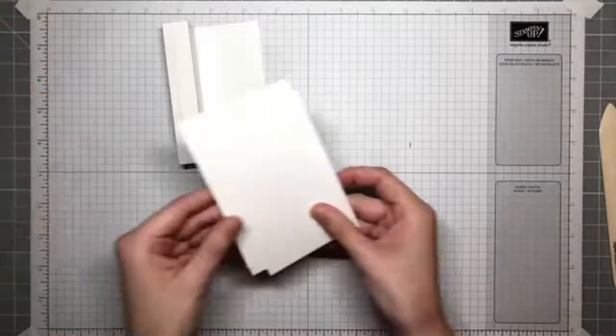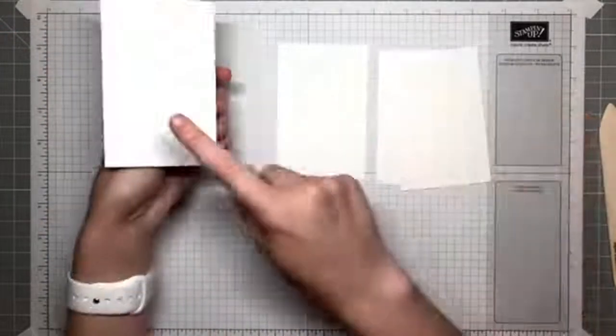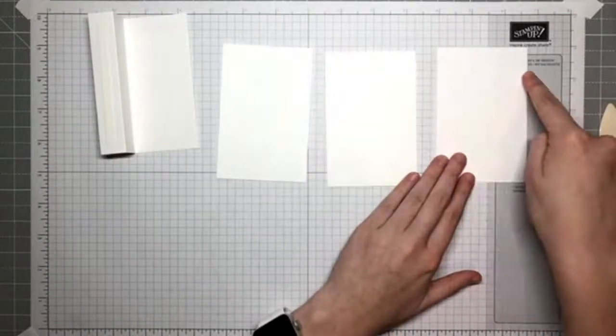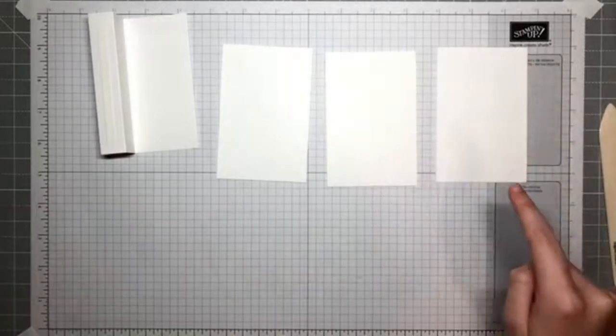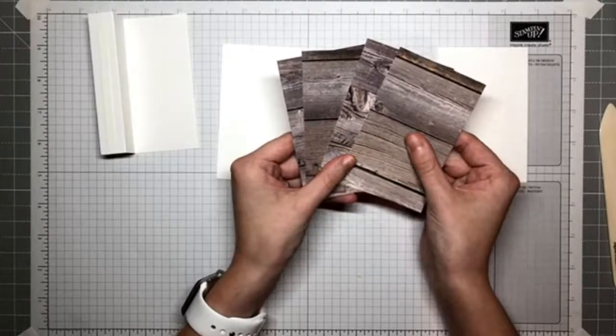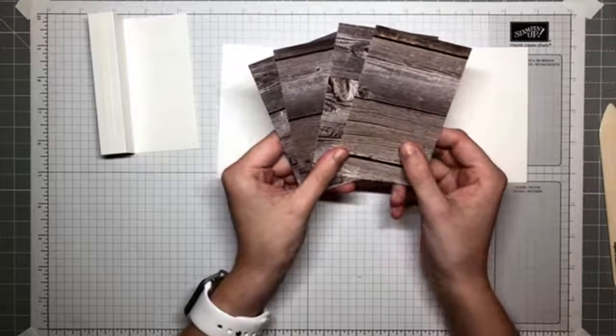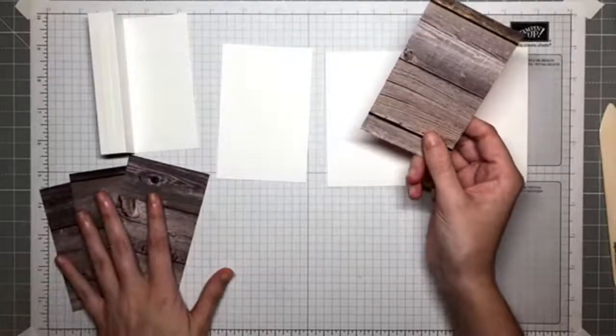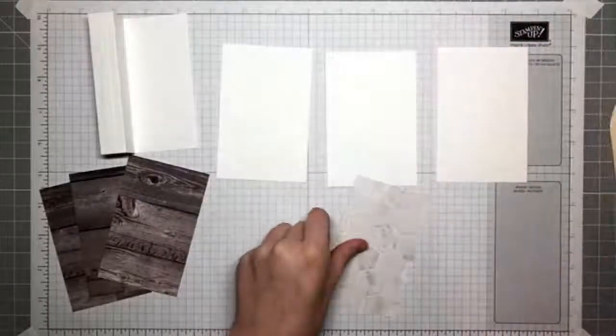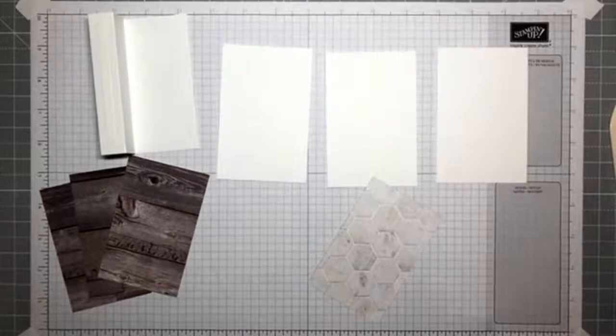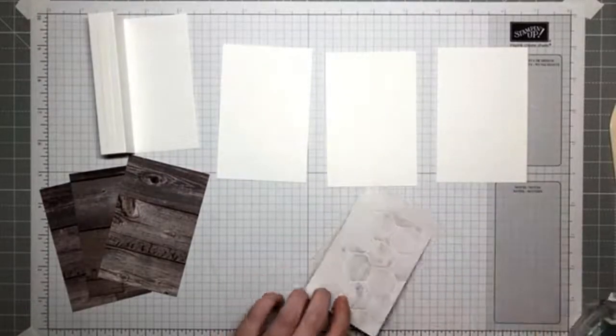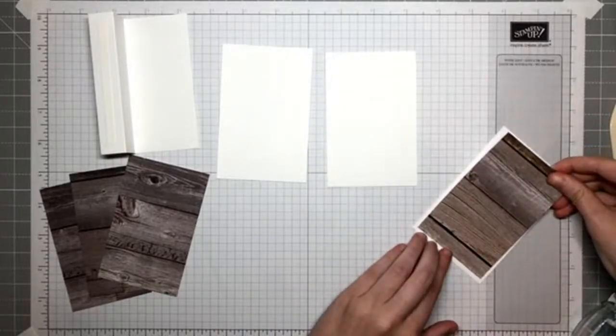But before we do that, I'm going to show you. So I've got three pieces here because we've already got this one. We only need three more. And these are cut at two and three quarters by four and a quarter. And then I've also got these little panels of the In Good Taste DSP. I loved the wood on here. Oh, Alicia, you're very welcome. This is, it's really fun. And I'm excited to see what you guys do with this. So make, you know, make something with this because I'd love to see what you do with it. All right. So I'm going to go ahead and adhere these onto the panels. I thought that this designer series paper was great, great, great, great for fall. It really reminds me of like a pumpkin patch or an apple orchard.